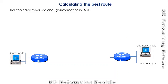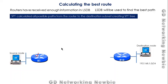The final step is calculating the best path. To recap: routers first become neighbors by exchanging hello messages, then exchange the LSDB. Once routers have sufficient information in their LSDB, they calculate the best path to each destination. For this, the router uses SPF — Shortest Path First — which calculates all possible paths from the router to the destination subnet.